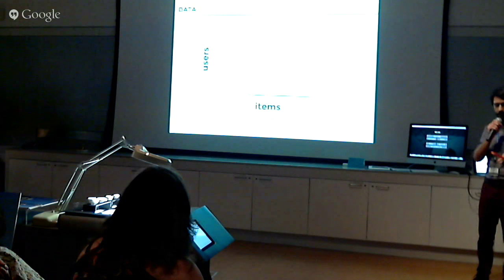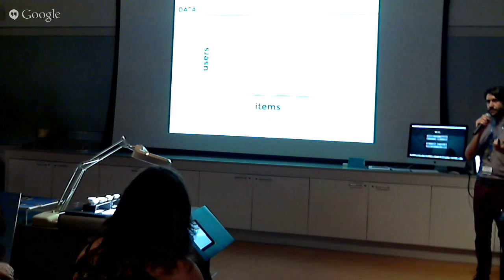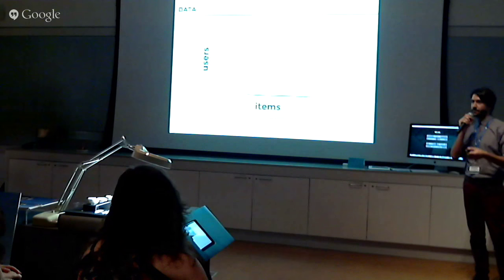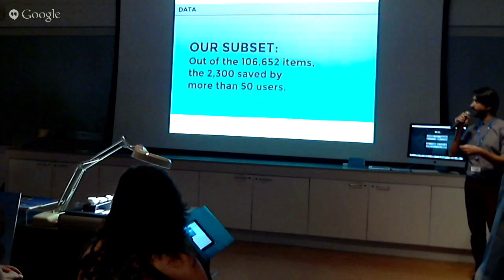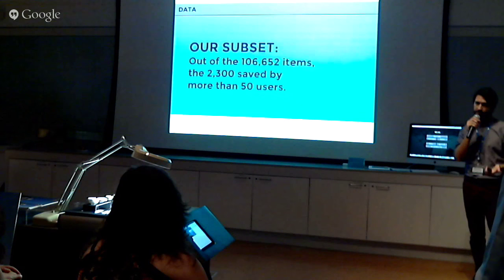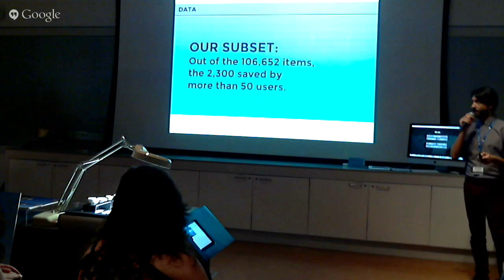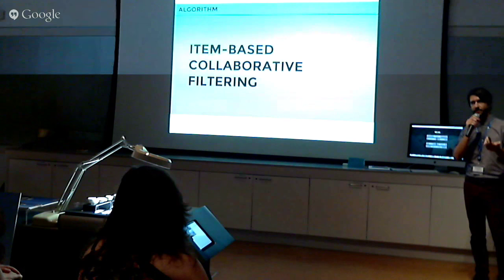The data from MyMet — about 100,000 users and 100,000 unique items — is very sparse. Some items were saved by only one user, or some users saved only one or two items. So what we did first was narrow down to the most popular items — those saved by at least 50 users — which narrows it to 2,300 items. Then we built an algorithm called item-based collaborative filtering, which Amazon uses as well.